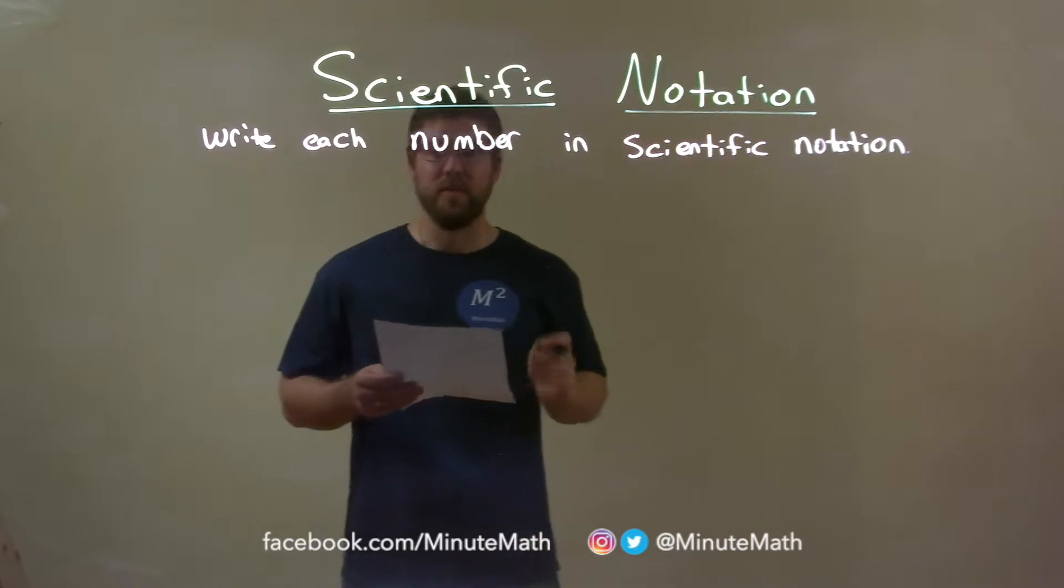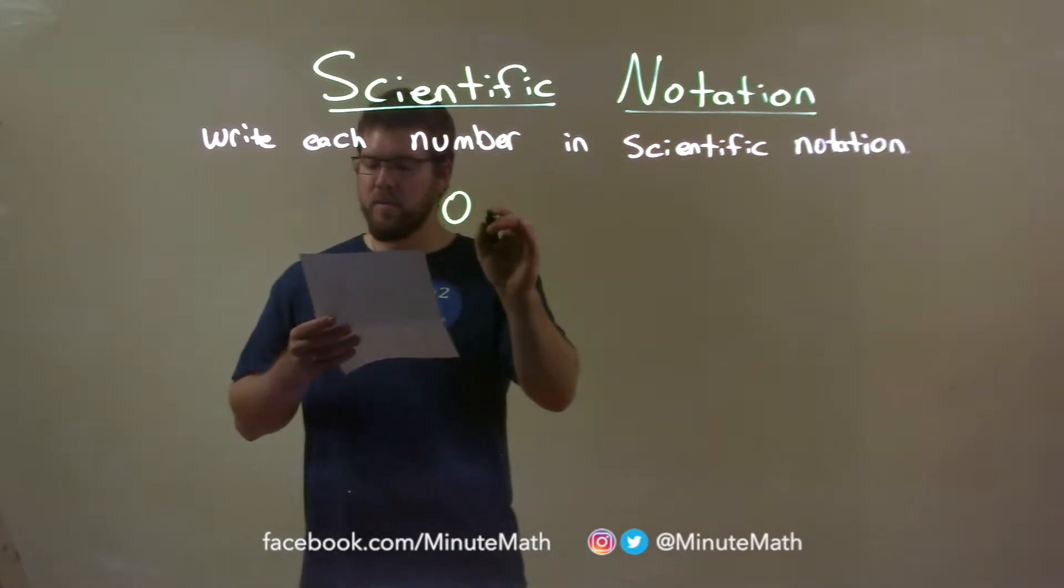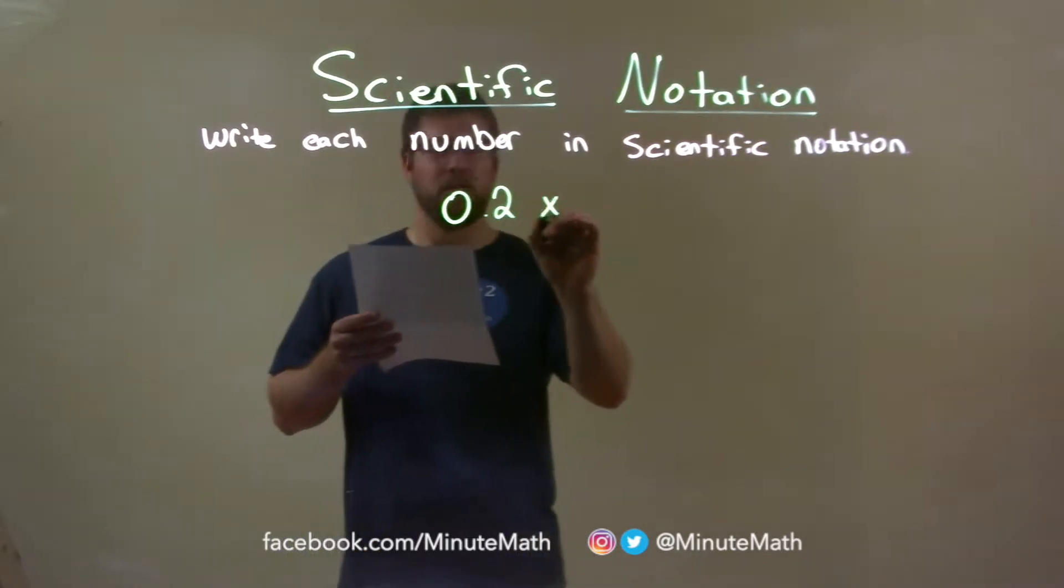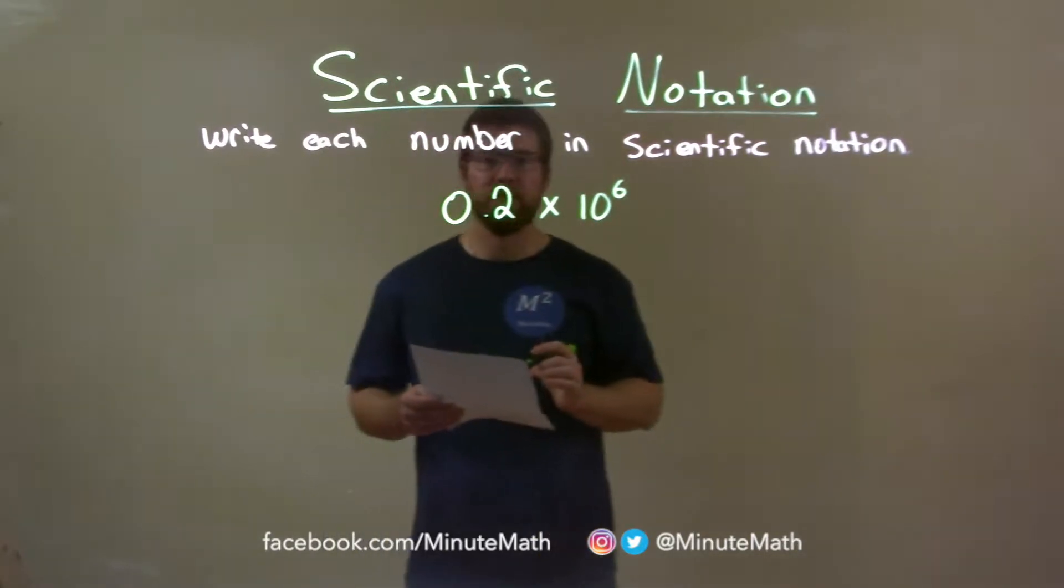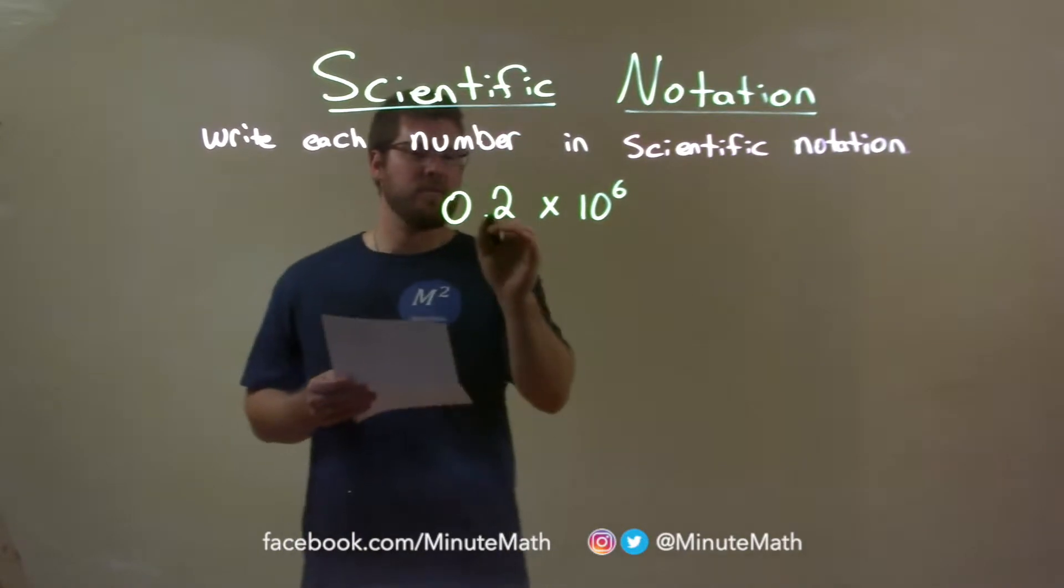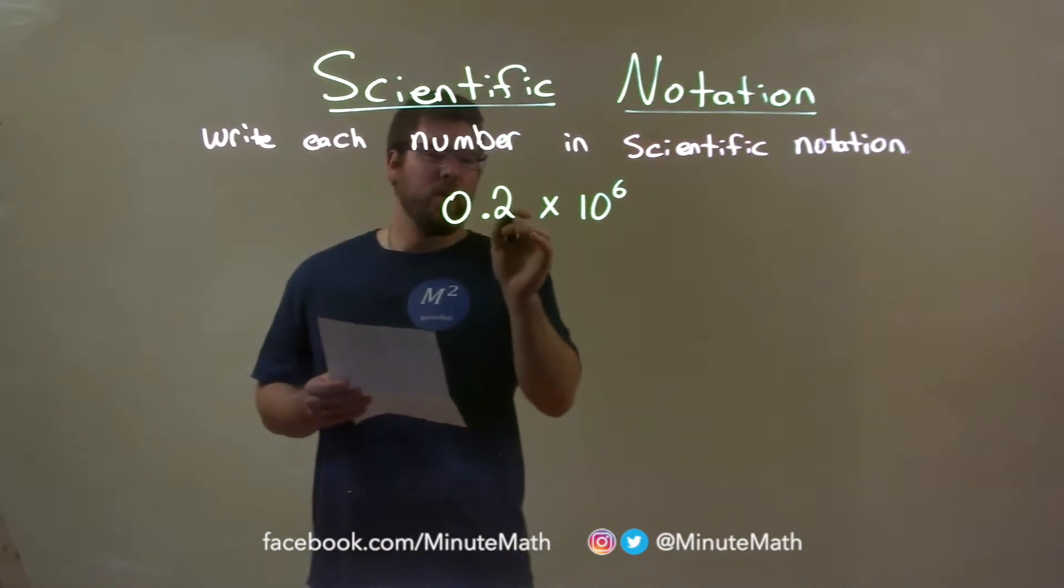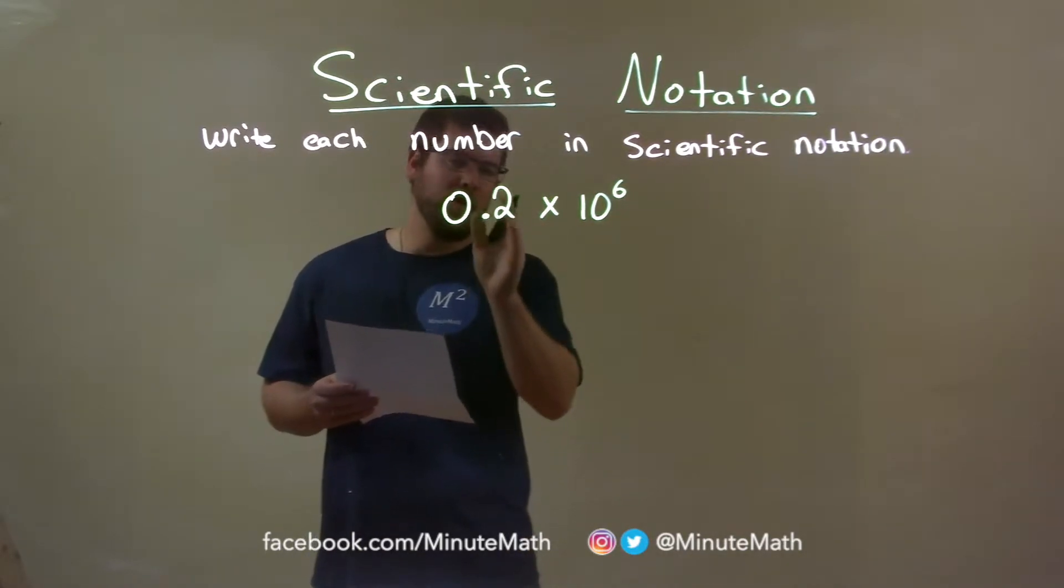If I was given this number, 0.2 times 10 to the 6th power. Alright, now scientific notation tells me that we have to have our first number in the 1's position.